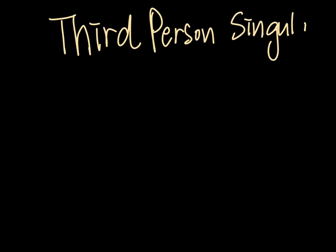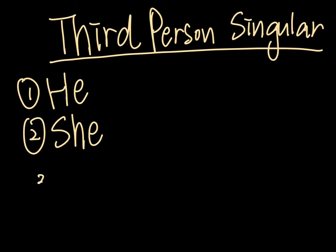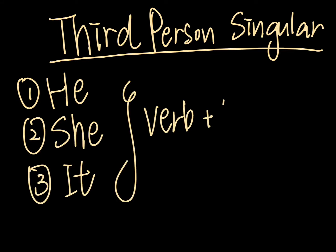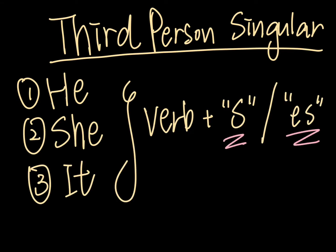So 'she' is actually the subject of the third person. Can you guess what the other two are? Since you're so smart, I'm sure you got the answers: 'he' and 'it.' For easy reference, take a look at this table. After he, she, or it, we should add S or ES after the verb. Then you'll probably have another question: when should I add S and when should I add ES?